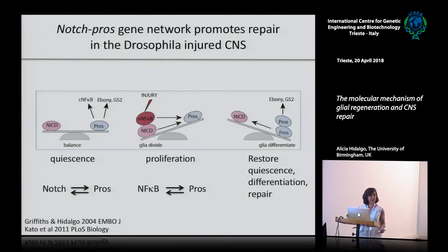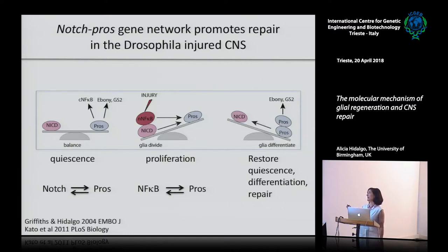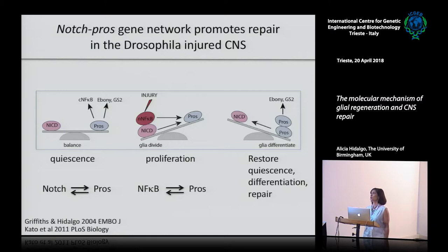Both NF-kB and Notch are activators of the cell cycle - they promote cell proliferation. As a consequence of increased levels of NF-kB in the nucleus and Notch intracellular in the nucleus, the glial cells now divide. These two factors also activate the expression of Prospero. So Prospero levels go up over time, Prospero inhibits proliferation, and glia stops dividing. Prospero activates glial differentiation markers, stopping the proliferative response and promoting differentiation. Prospero also activates the expression of Notch, restoring the G1 state, and triggers the expression of NF-kB, which goes to the cytoplasm, ready to respond to further injury.